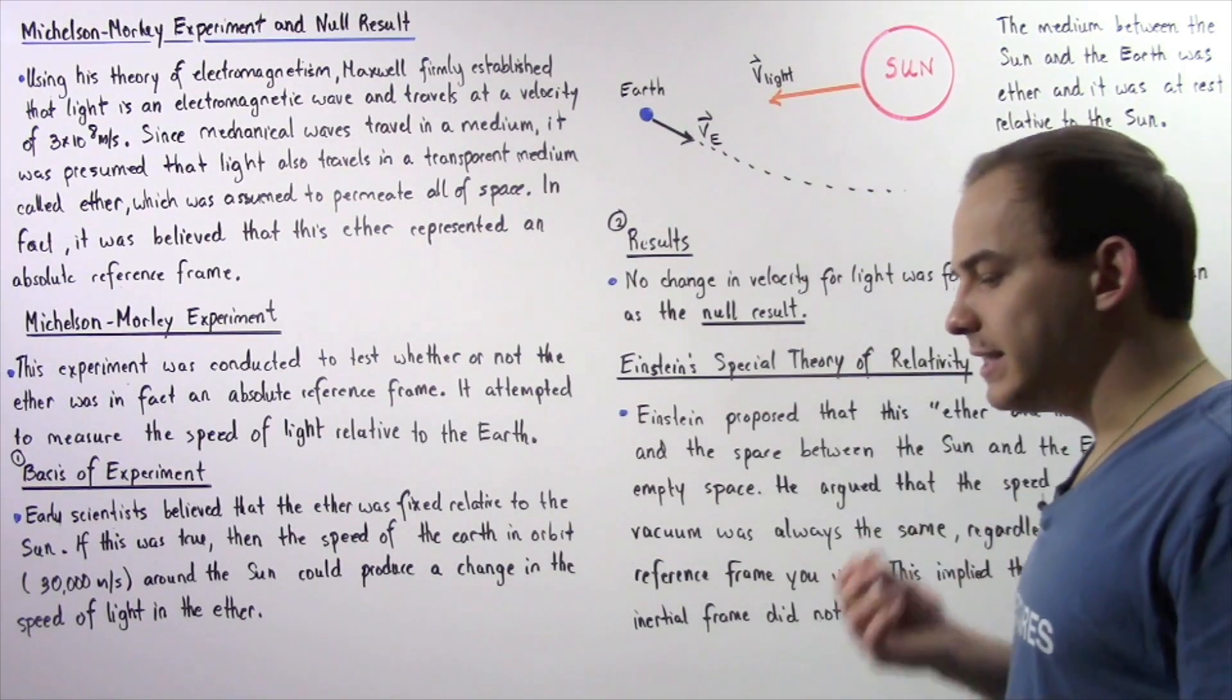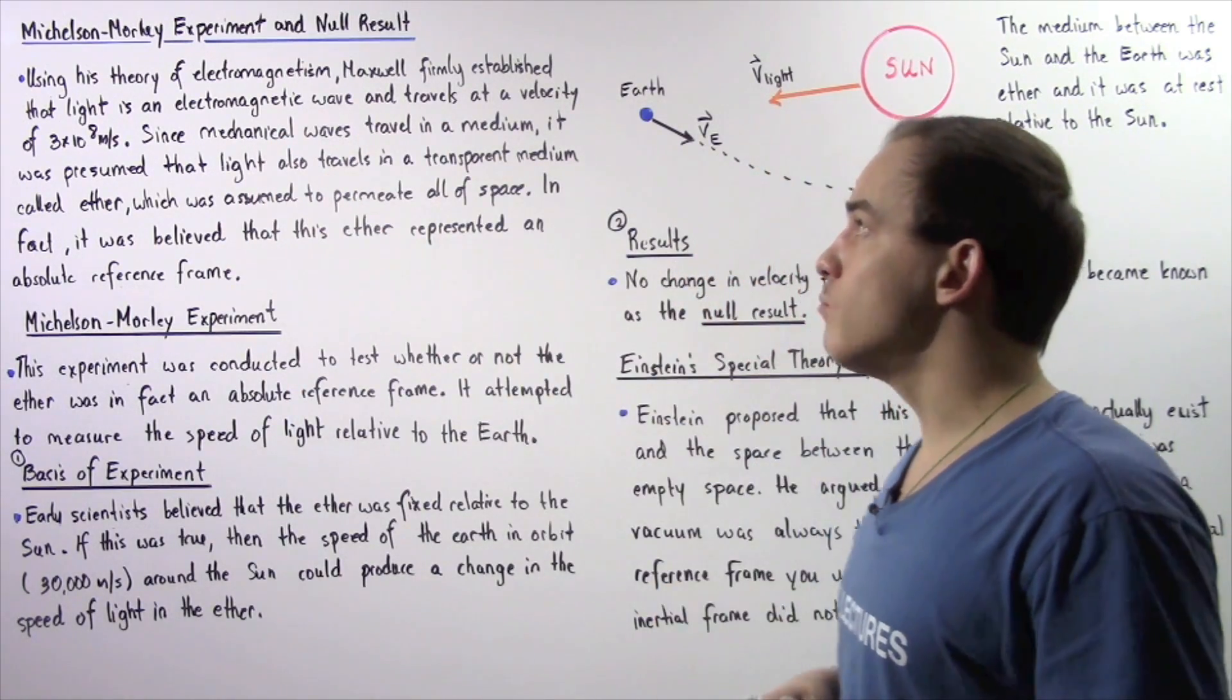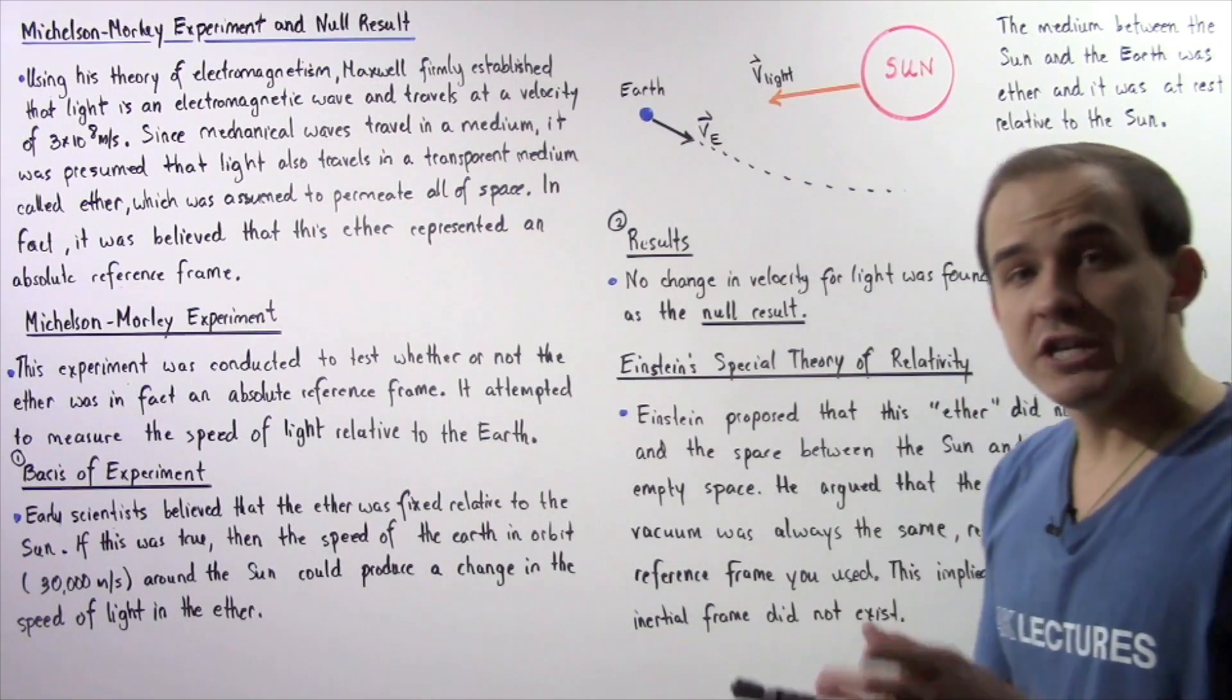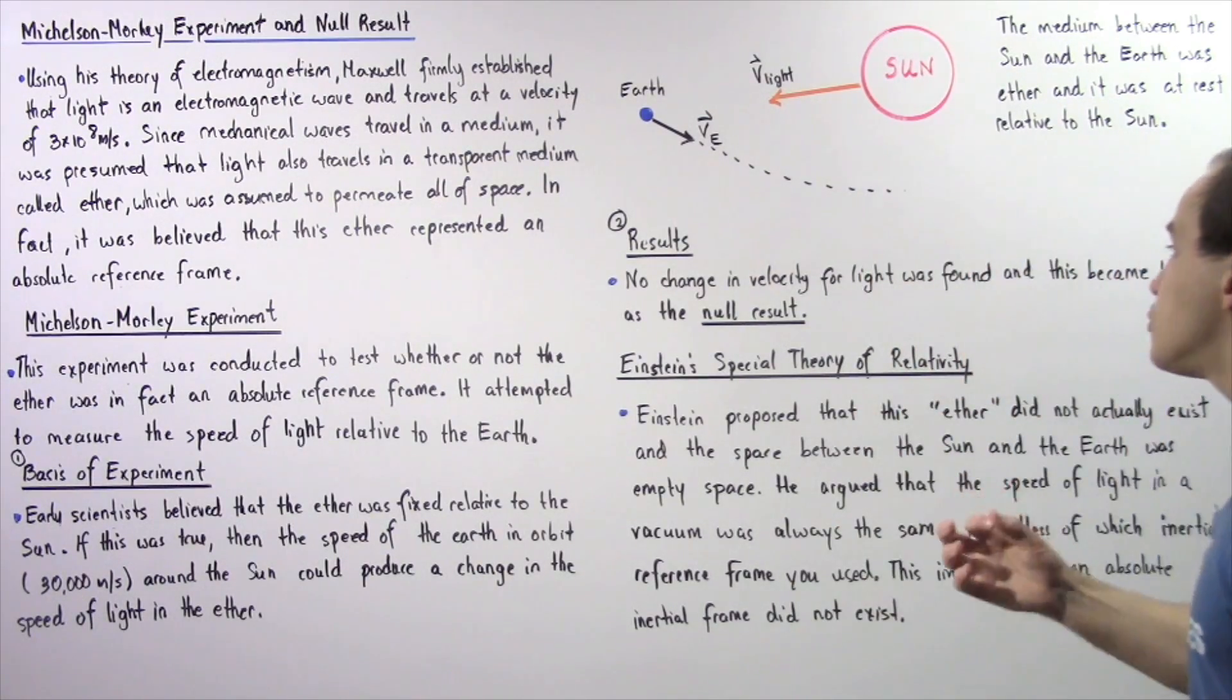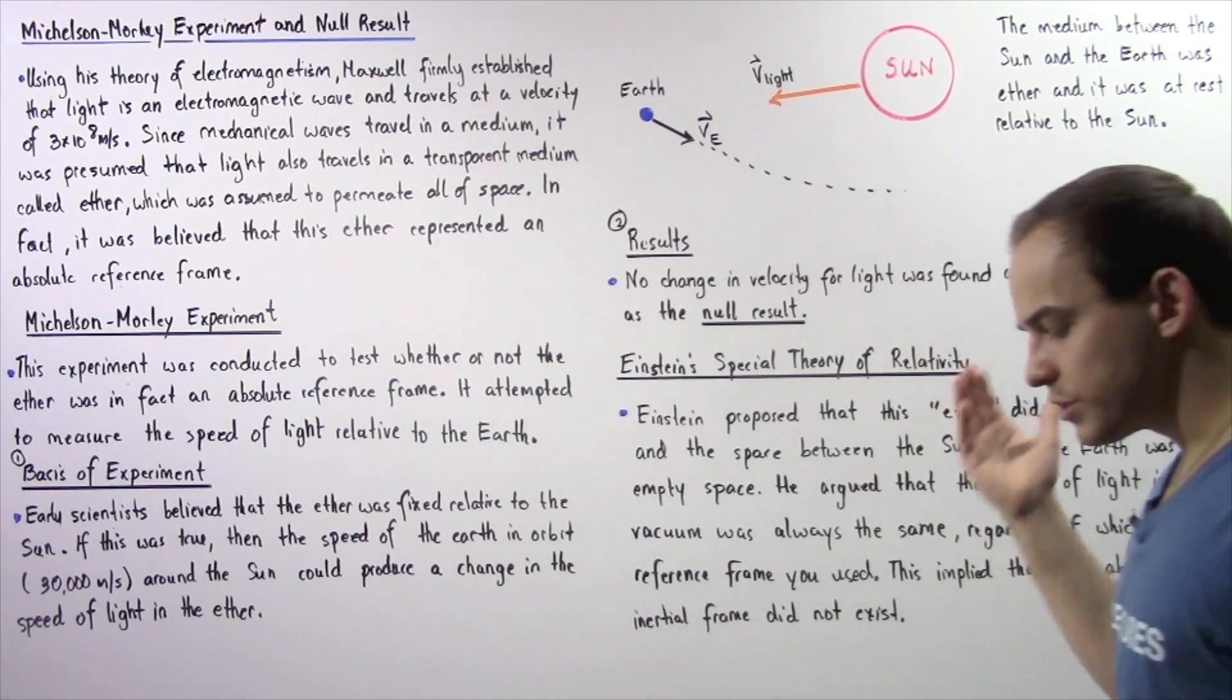Now what exactly did the results show? What were the results of the Michelson-Morley experiment? Well, no change, no shift in velocity was actually found for the light. And this became known as the null result.